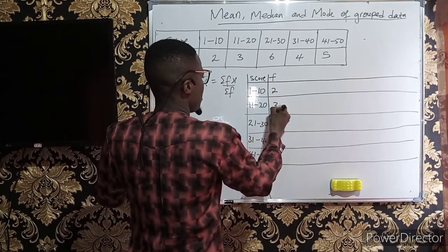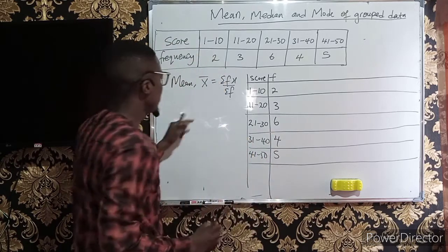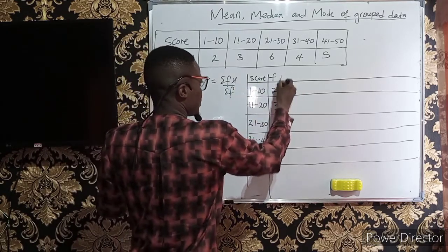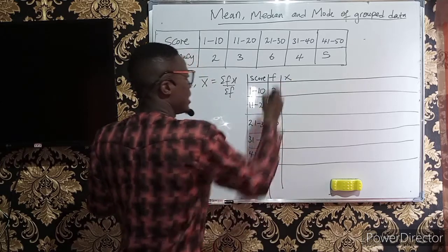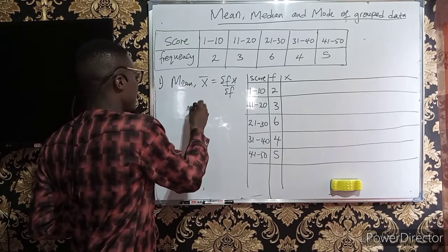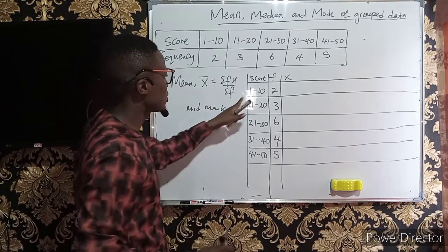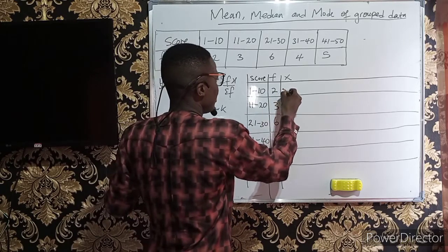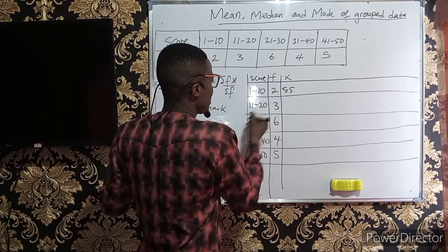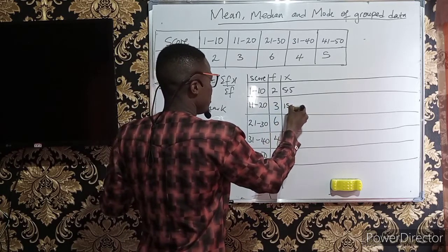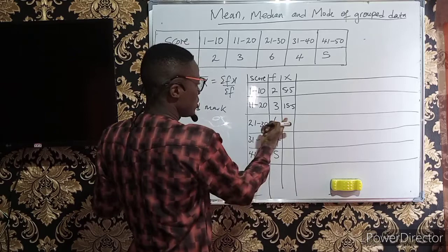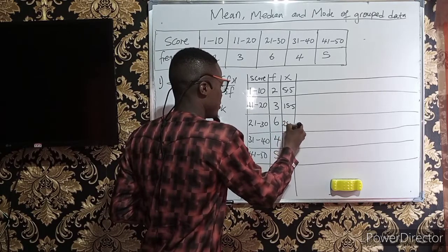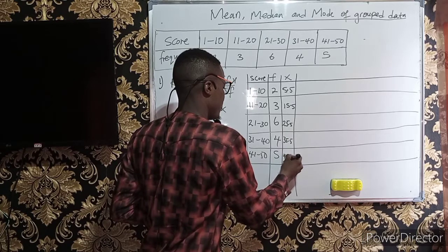The frequencies are 2, 3, 6, 4, and 5. Looking at the formula x-bar = summation fx, I need to get fx, but first I need x. For grouped data, x is known as the class mid-mark. To get it, sum the class interval boundaries and divide by 2. So 1 plus 10 is 11, divided by 2 gives 5.5. The next is 31 divided by 2, giving 15.5. Since the classes are uniform and increasing by 10, just keep adding 10: 25.5, 35.5, 45.5.